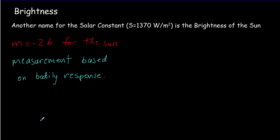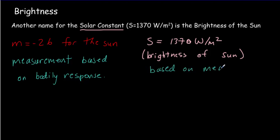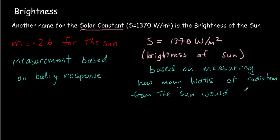When we studied the greenhouse effect, we had the solar constant. That S was equal to thirteen hundred and seventy watts per meter squared. So we could call that the brightness of the sun. It's really based on measuring how many watts of radiation from the sun would strike one meter squared at the Earth.